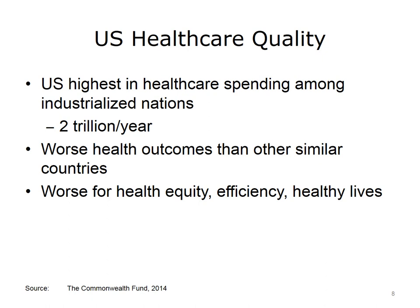In the U.S., there are puzzling results related to the pursuit of quality. The United States spends approximately $2 trillion a year on health care — approximately 16% of the gross national product, or $8,508 per person per year — the highest in the world. Yet among leading nations such as Britain and Canada, health outcomes are poor in our country. The overall score for health care outcomes in the United States is 11th out of 11 nations, and we are also the worst nation for health equity, efficiency, and healthy lives.